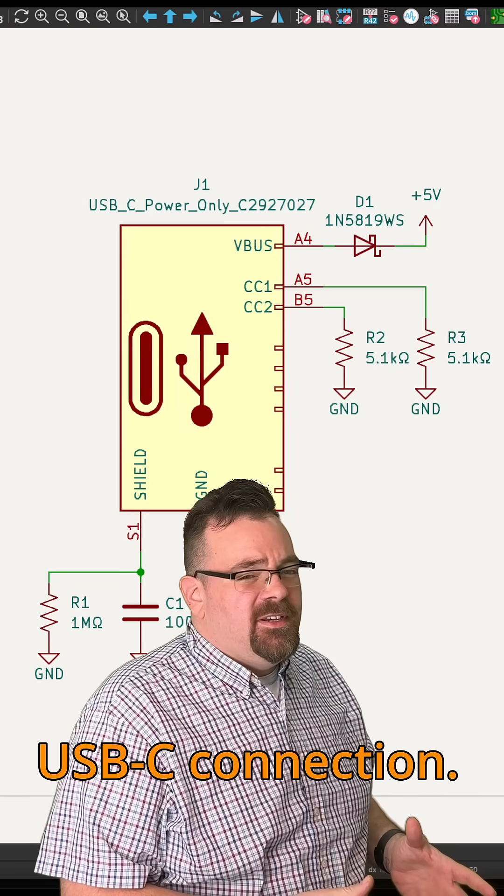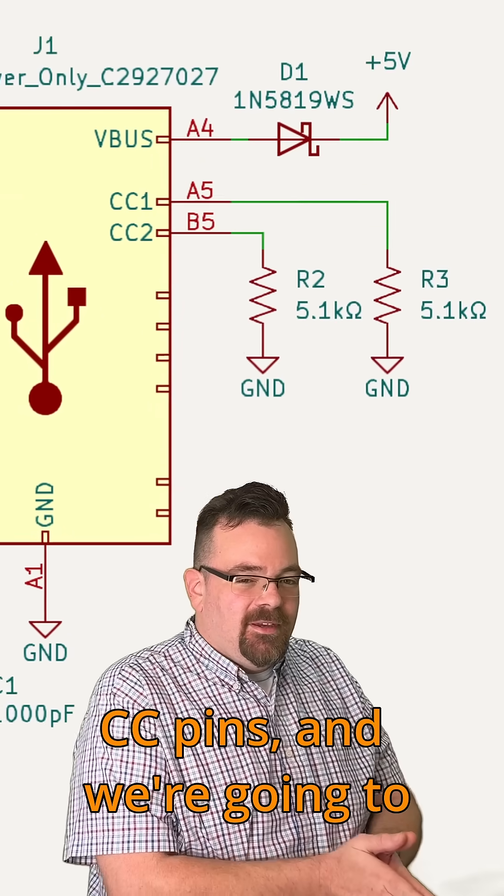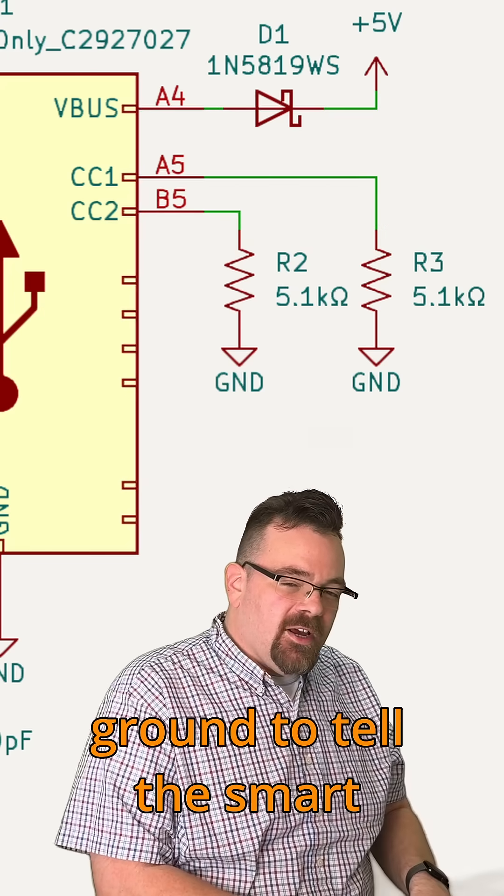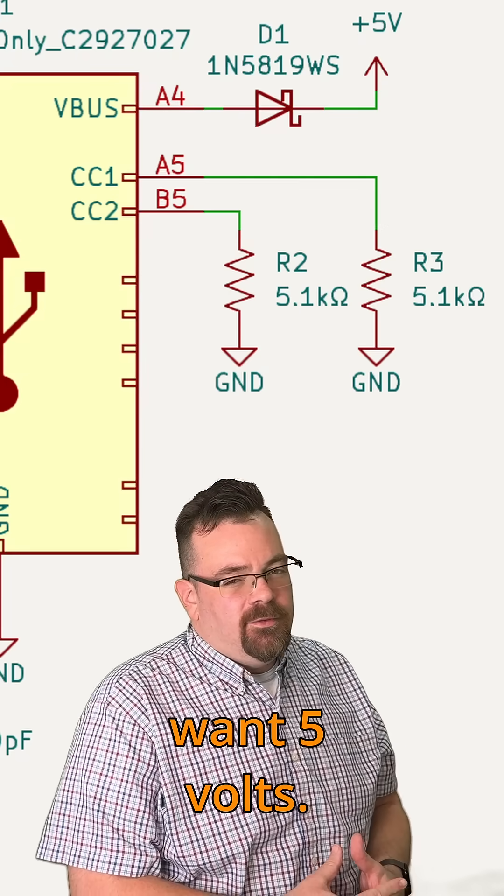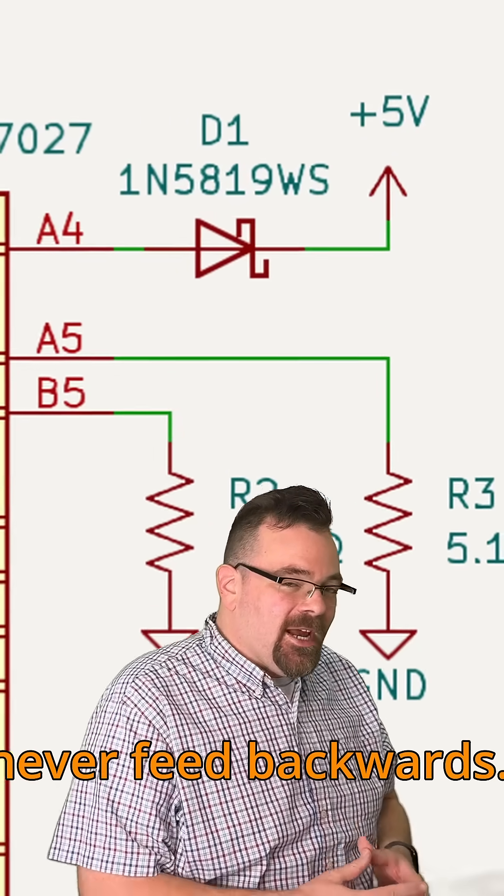First, let's go over the USB-C connection. Every USB-C connection is going to have these CC pins, and we're going to need to use 5.1 kiloohm resistors to the ground to tell the smart power supplies that we want 5 volts. I've added this Schottky diode just to make sure that power can never feed backwards.